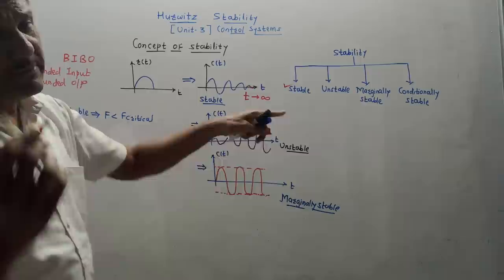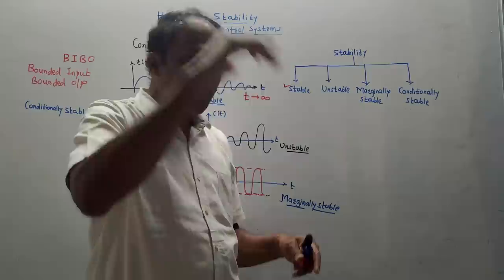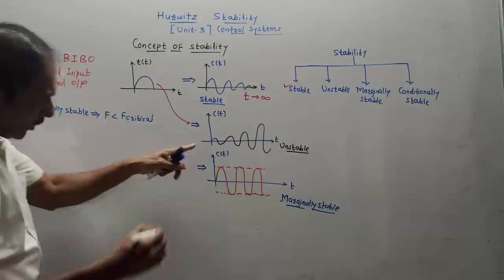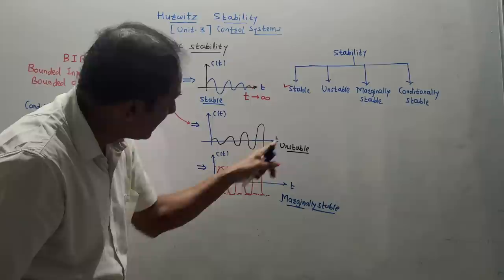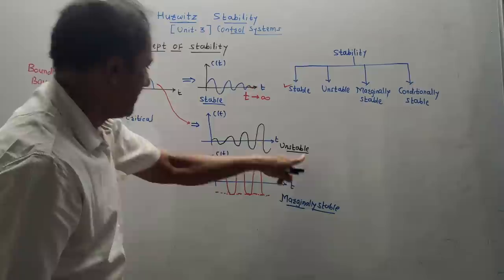Second is the unstable system. Apply finite input to the system, and if infinity output is received — that is an unstable system. Apply the same input to a system and the output keeps increasing without any limit till infinity. Such a system is called an unstable system.